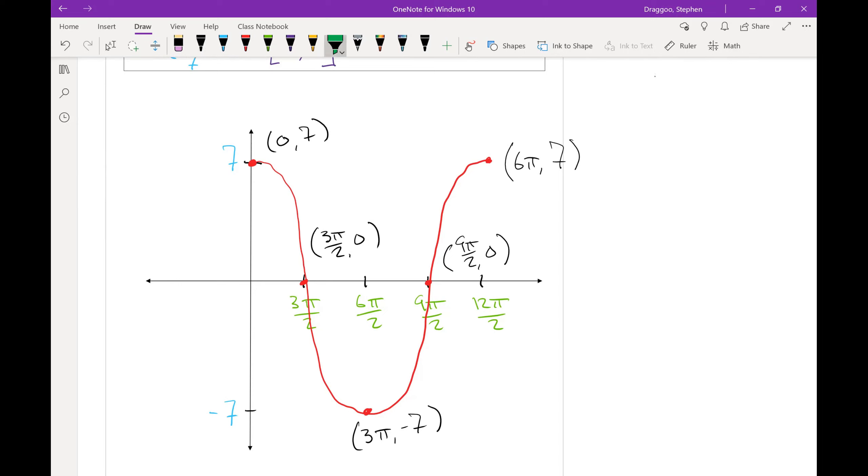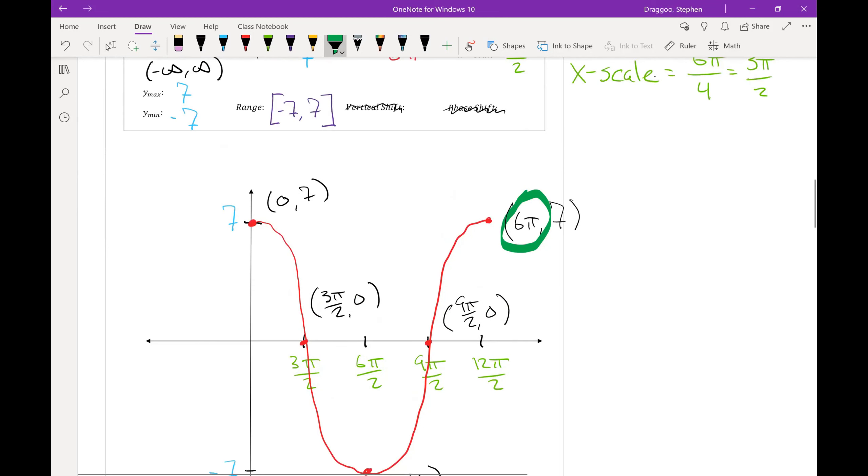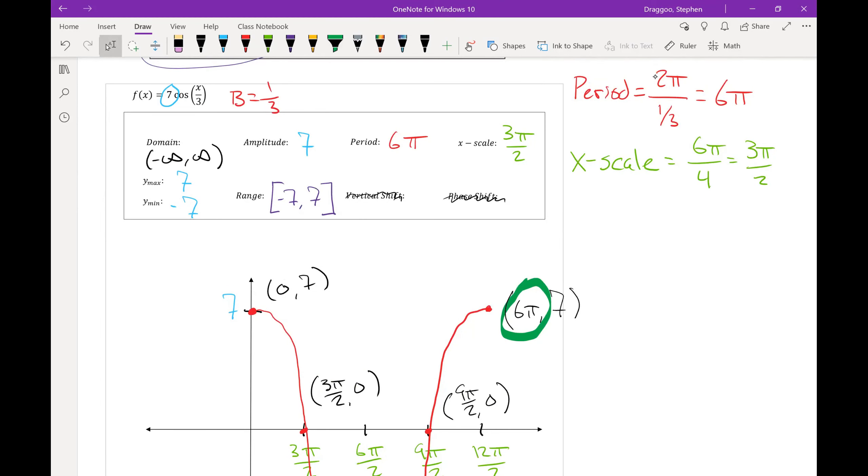So notice that this graph, just like the last one, ended at its period. The period was 6π, and the final point on this graph is 6π. As long as we don't have a phase shift, our graph should always start at zero and end at the period. The phase shift is the element we're going to be covering last. Without a phase shift, every graph starts at zero and ends at the period.